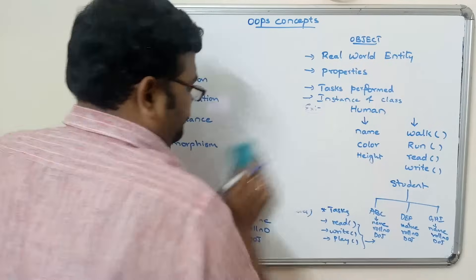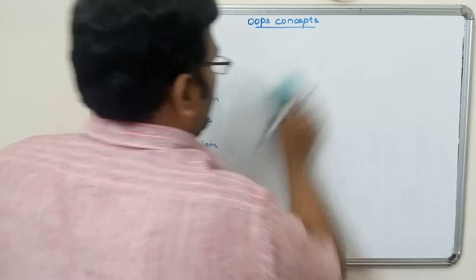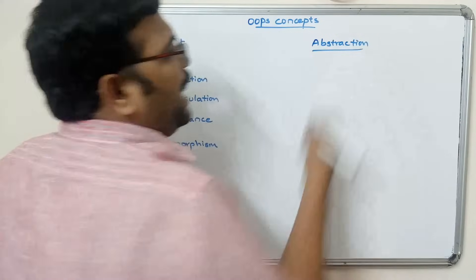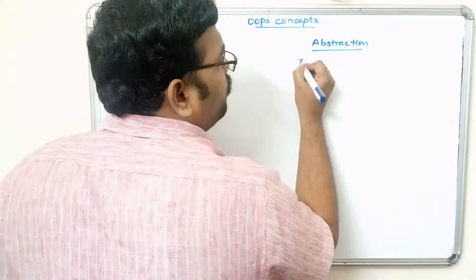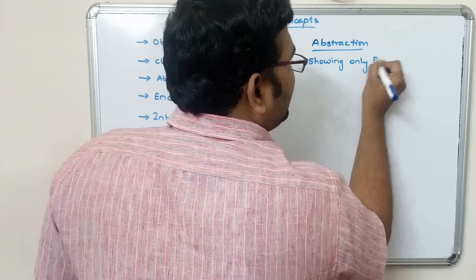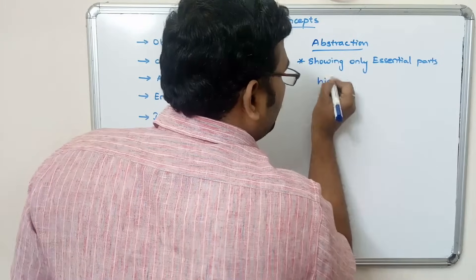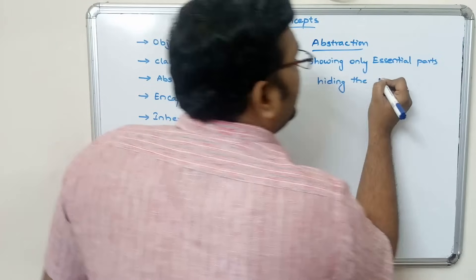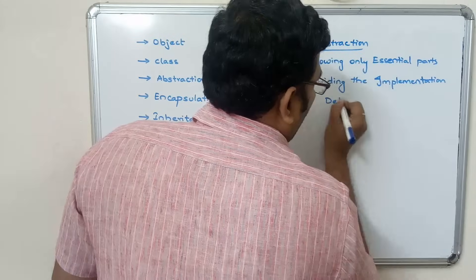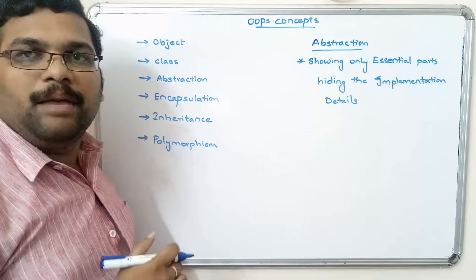Next is abstraction. Abstraction means showing only the essential parts and hiding the implementation details.